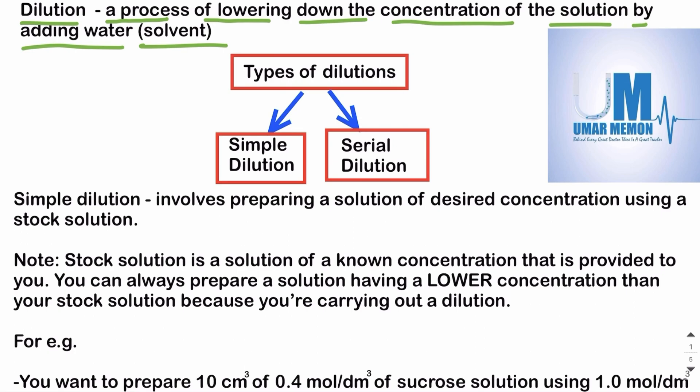A stock solution is basically a solution of known concentration that is given to us. For example, we can be given a 1 mole per dm³ sucrose solution, or a 1 mole per dm³ glucose solution, or a 5% sodium chloride solution. We can be given any stock solution of known concentration and use it to prepare solutions of different concentrations — for example, 0.8, 0.6, or 0.4 mole per dm³ sucrose solution.